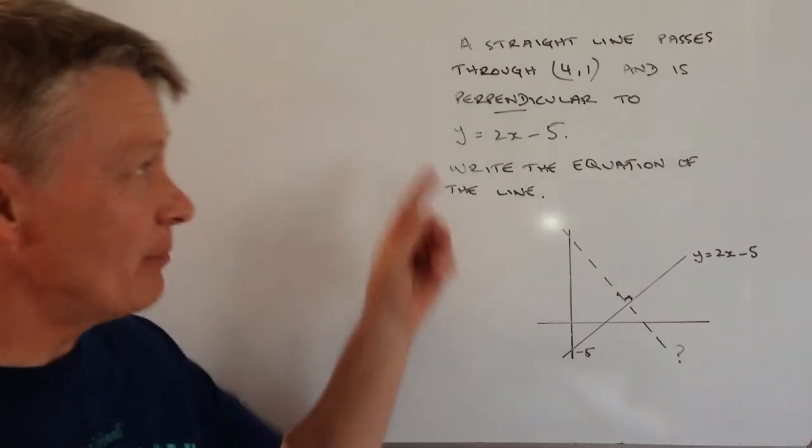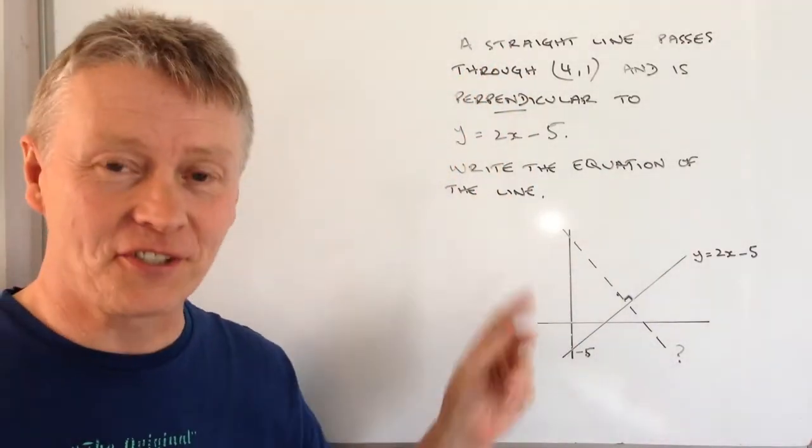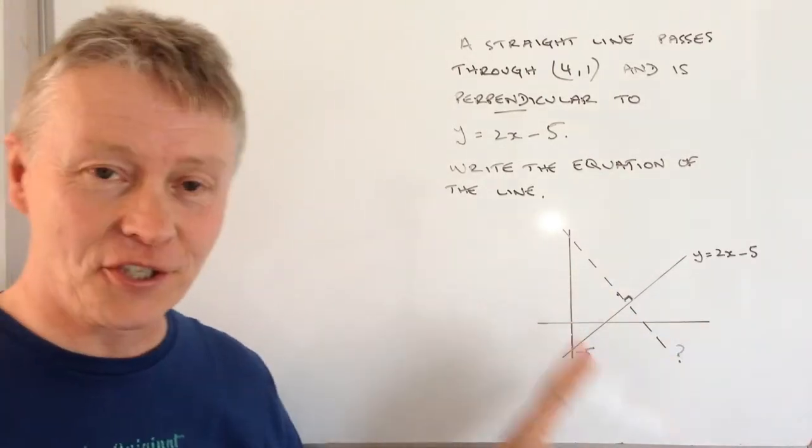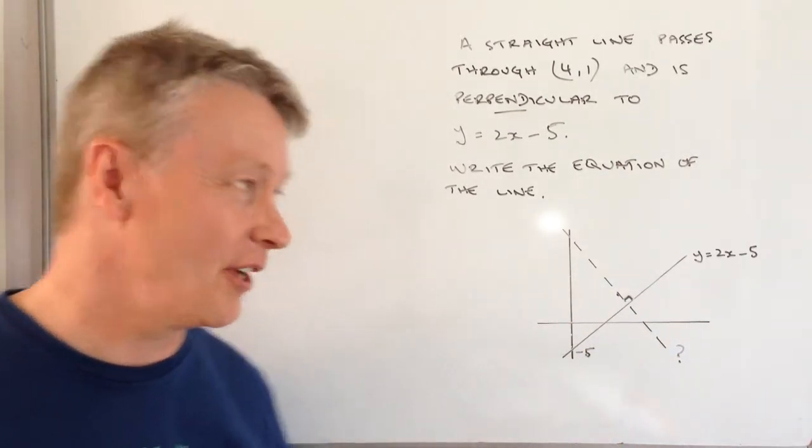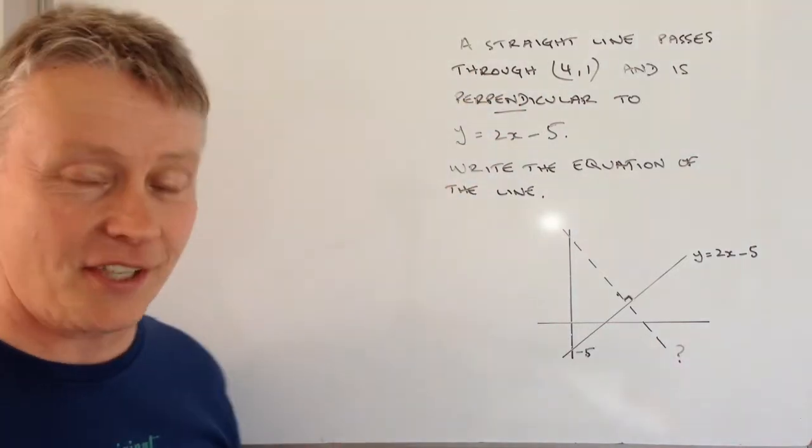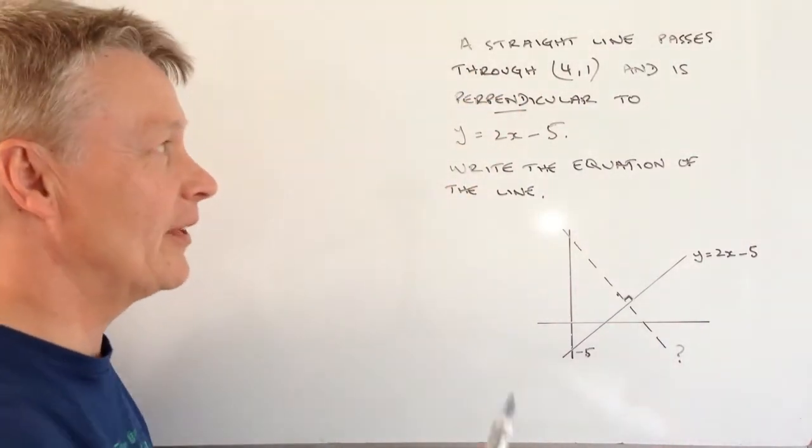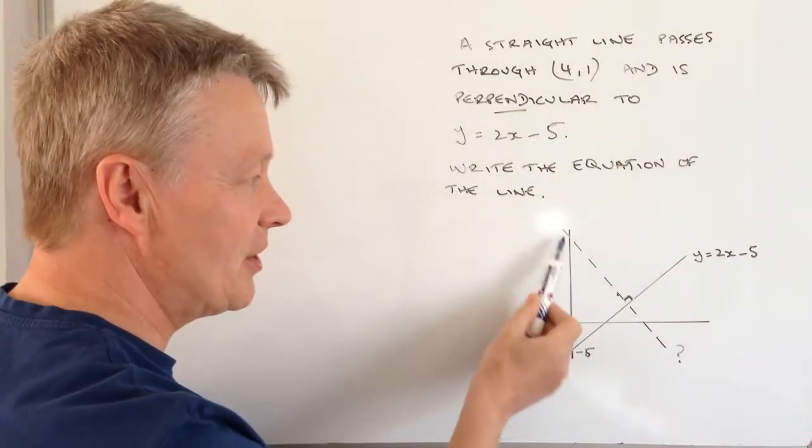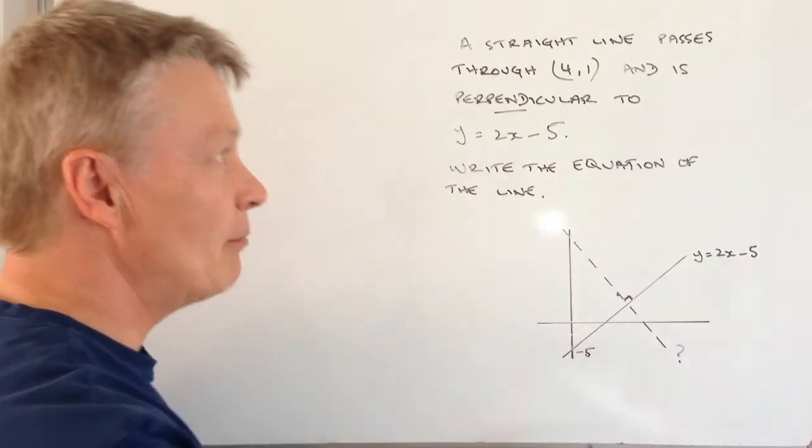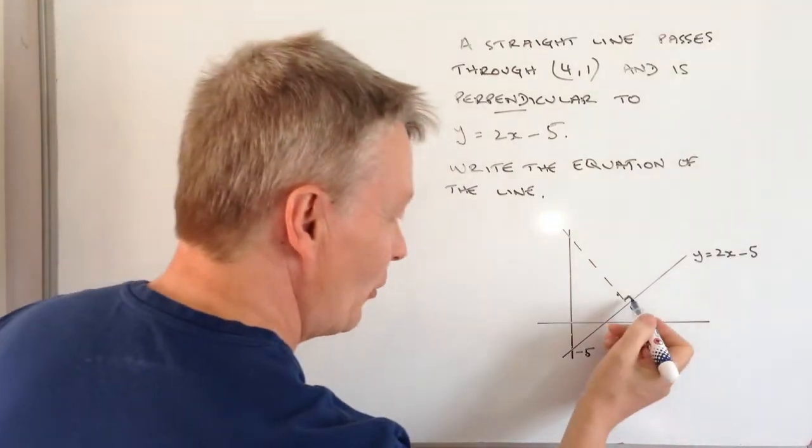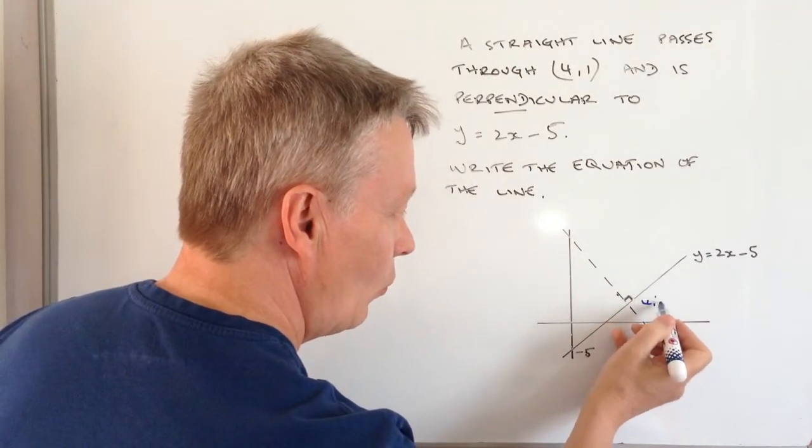Hi, in this video we've been given this text, although I thought it'd be easier to add a sketch to the bottom as well. You're normally just given the text, which I'll write in full in the description. But basically they're saying a straight line, which is this straight line here, passes through the point (4,1).